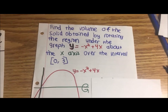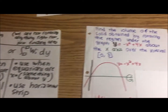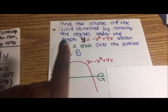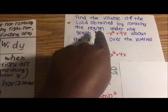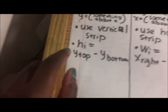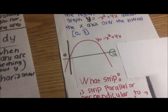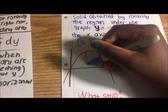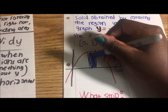First, since the equation is y equals something in x, we use a vertical strip. The strip is vertical. I'll draw it here and label it xi with dx.